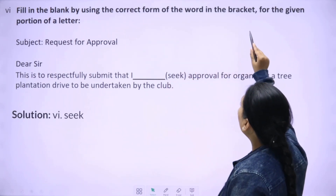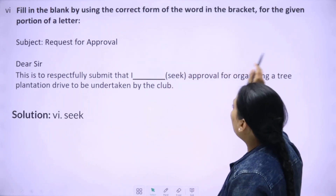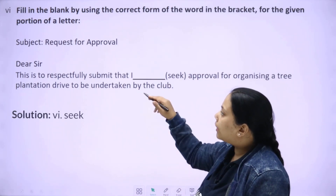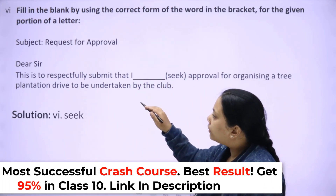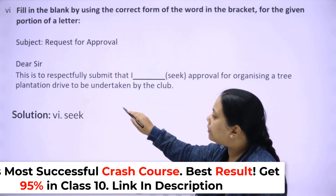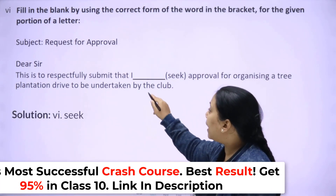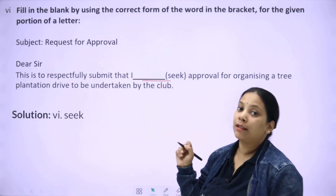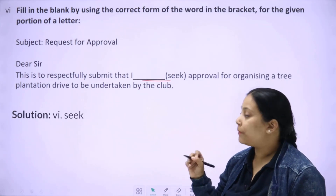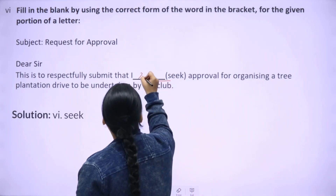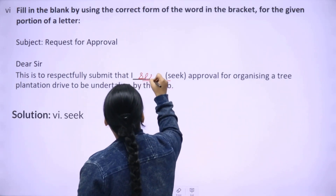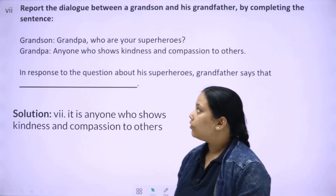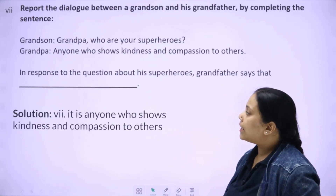Next: fill in the blank by using the correct form of the word in brackets for the given portion of a letter. Subject: 'Request for approval. Dear Sir, this is to respectfully submit that...' We always write letters in simple present tense, so 'seek' will come here. You have practiced letter writing many times, so this should be familiar.